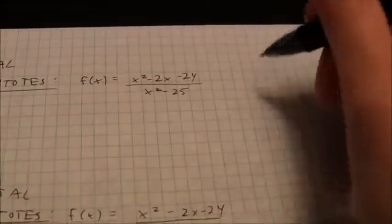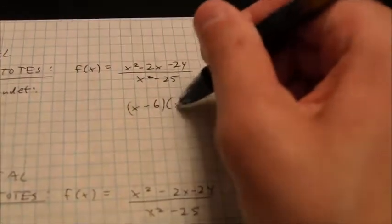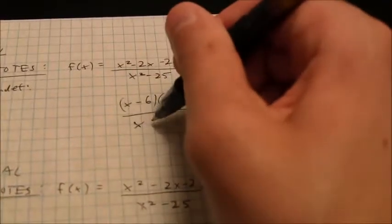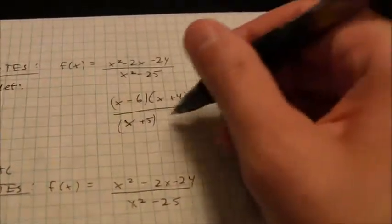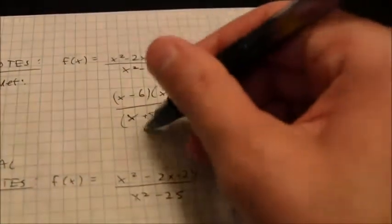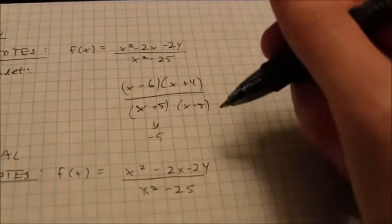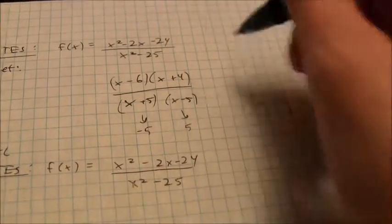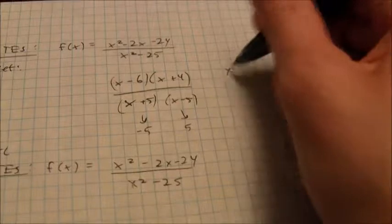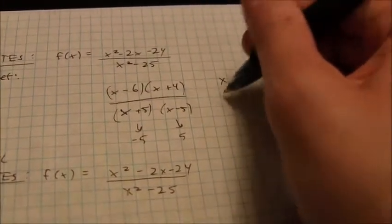A reminder for working with rational functions: you want to find vertical asymptotes. Vertical asymptotes occur when the denominator is zero. You can factor — in this case you get (x − 6)(x + 4) over (x + 5)(x − 5), which is a difference of squares. This is undefined when x equals negative 5 or x equals 5, so those are your two vertical asymptotes.